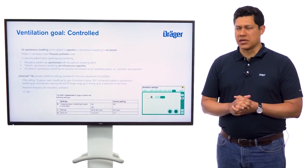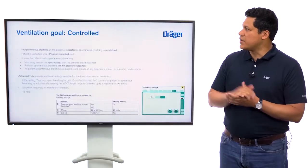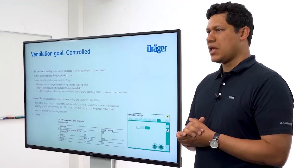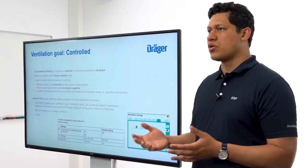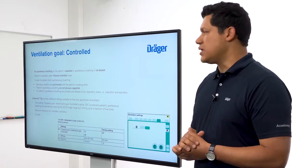The first option for ventilation goal is Control, where spontaneous breathing is not expected or desired. The patient will be ventilated under pressure control mode. If the patient starts spontaneously breathing, mandatory breaths will be synchronized with the patient's spontaneous breathing, but spontaneous breaths will not be pressure supported. Spontaneous breathing is allowed in any phase of ventilation, during inspiration or exhalation.